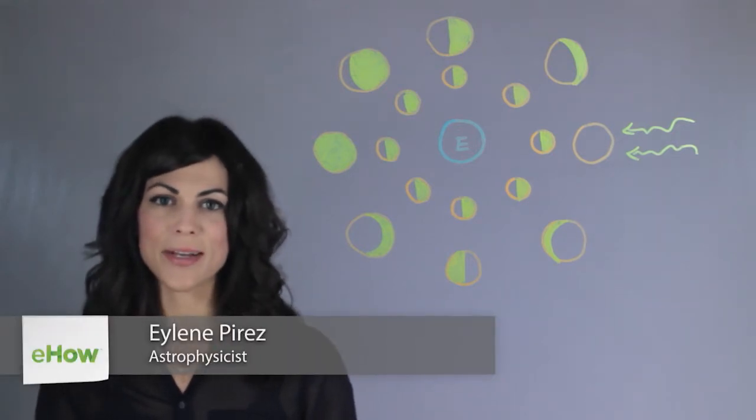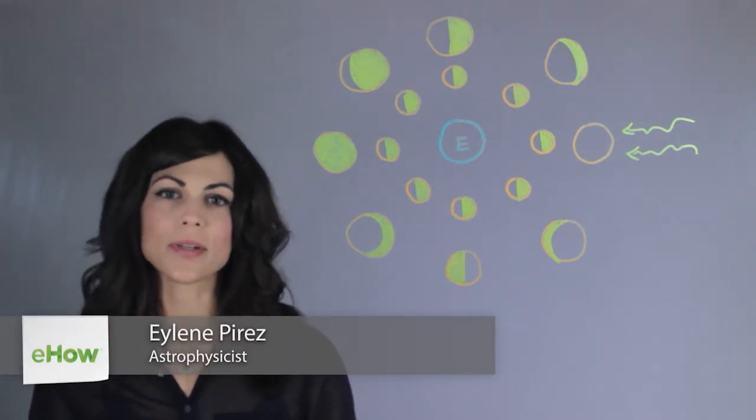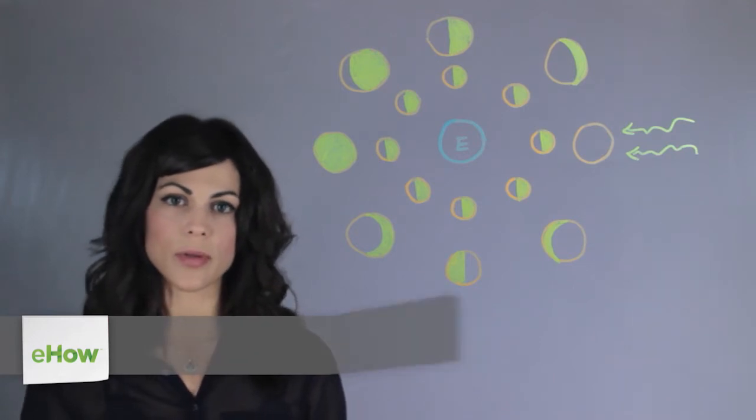Hi, my name is Aileen Perez and I'm an astrophysicist and this is what happens to the moon's appearance as it revolves around the Earth.